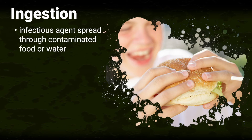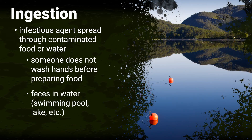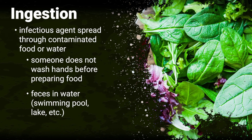Ingestion. Ingestion of contaminated food or water is another common cause of disease — this mode of transmission is known as the fecal route. If someone prepares food without washing their hands after going to the bathroom, they may contaminate the food with germs from their feces. Germs can be transmitted to many individuals through a single contaminated source, such as a beach closed due to fecal matter from animals, or a food crop like spinach contaminated with E. coli from irrigation water.